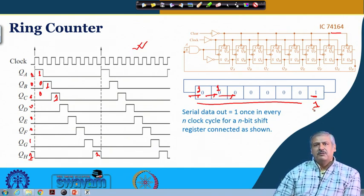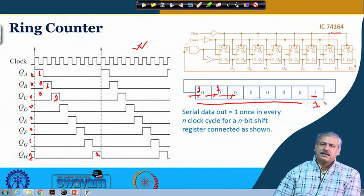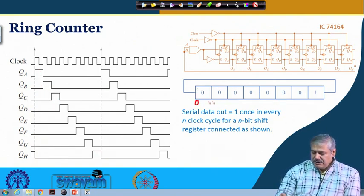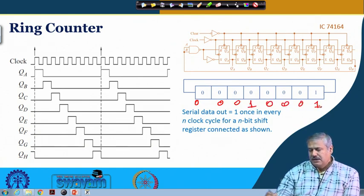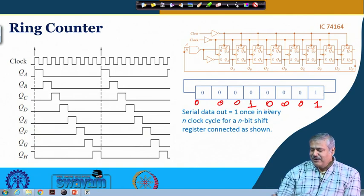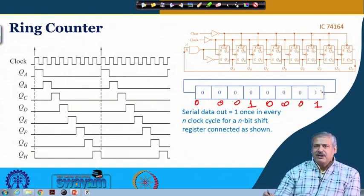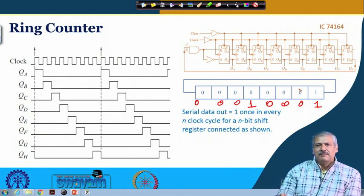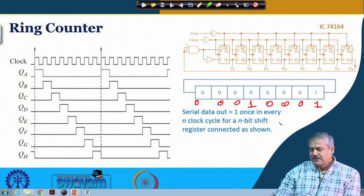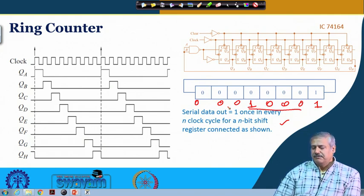In the ring counter, the last flip-flop output directly indicates that a count of n has taken place — no extra decoding circuit is needed. If instead we initialize with 00010001, the 1 returns after only 4 clock pulses, making it a mod-4 counter. With this ring counter arrangement, the maximum count achievable from an n-bit shift register is modulo n. We can get less depending on how we initialize the flip-flops.